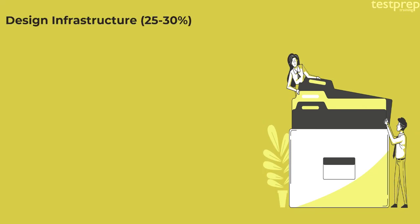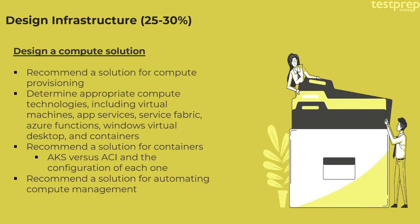Design Infrastructure comprises 25-30% weightage, understood in four parts. Number one: Design a Compute Solution, divided into five parts — recommend a solution for compute provisioning; determine appropriate compute technologies including virtual machines, app services, service fabric, Azure Functions, Windows Virtual Desktop, and containers; recommend a solution for containers; AKS versus ACI and the configuration of each; recommend a solution for automated compute management.